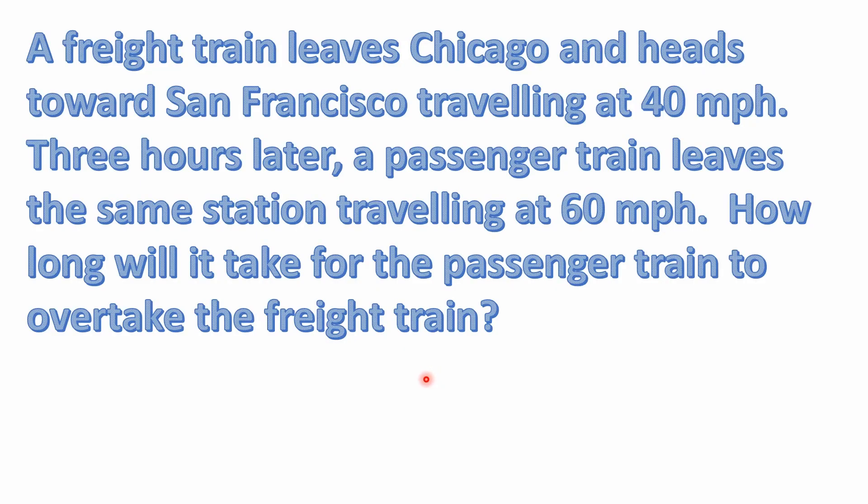Hello everyone and welcome back to the math puzzle crash course. I've got one of the infamous word problems here — the dreaded two trains problem — that a lot of people probably remember from elementary school. It's an example of solving a word problem using algebra. A freight train leaves Chicago heading towards San Francisco traveling at 40 miles per hour. Three hours later, a passenger train leaves the same station traveling at 60 miles per hour. How long will it take for the passenger train to overtake the freight train?